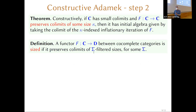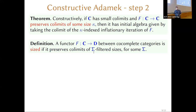A functor between two co-complete categories (in our internal language in the topos with natural numbers and universes) is called sized if it preserves co-limits of σ-filtered sizes, where a size is σ-filtered when you've got upper bounds of arities coming from σ. The object of interest is: are there very many sized functors? Every sized functor has an initial algebra, because the theorem says we can form an initial algebra if we can find some size for which the functor preserves co-limits of that size.